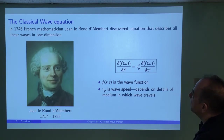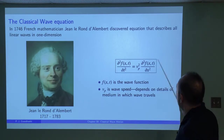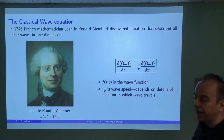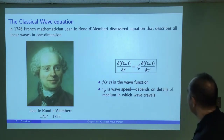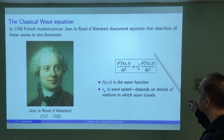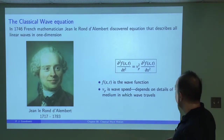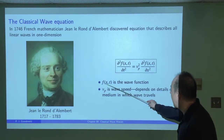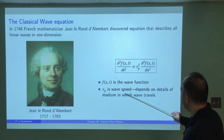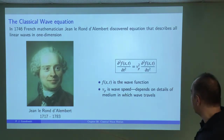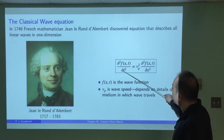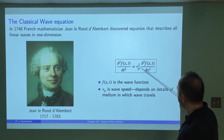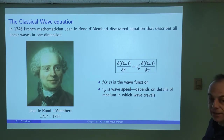It all goes back to 1746, where d'Alembert discovered that one equation can be used to describe all linear waves in one dimension. This partial differential equation is the master equation for all linear waves in 1D. The function f(x,t) is the wave function, and vp is the speed at which the wave is moving in the medium. The second partial derivative with respect to time equals the wave speed squared times the second partial derivative with respect to position.